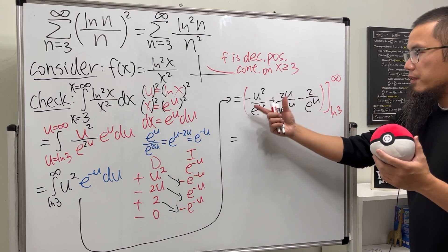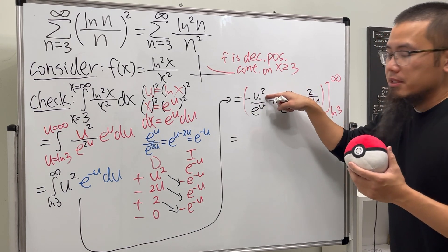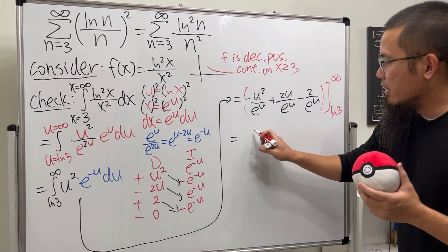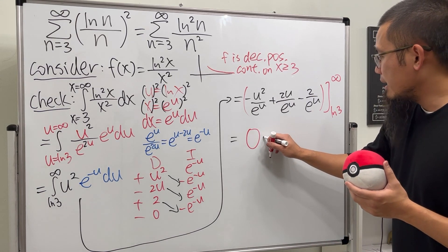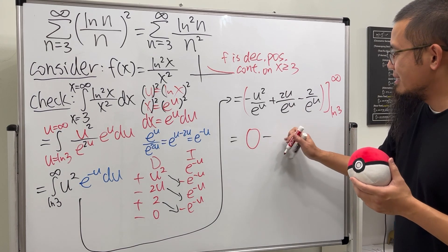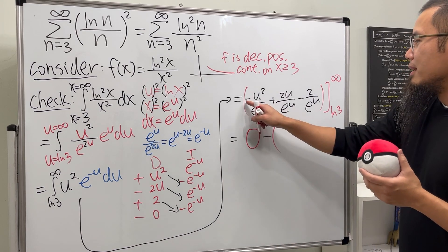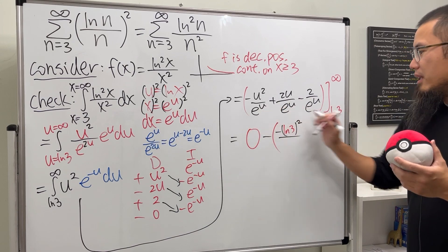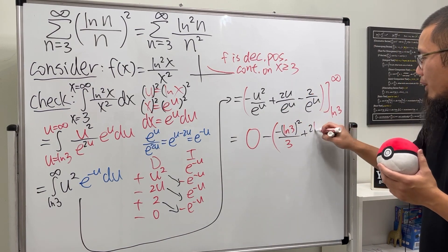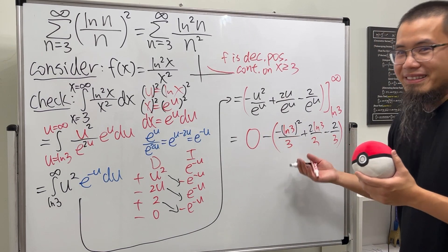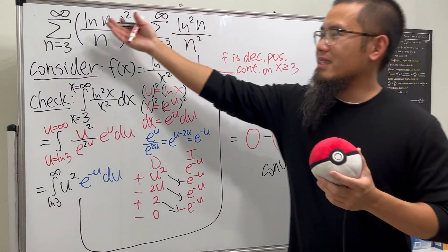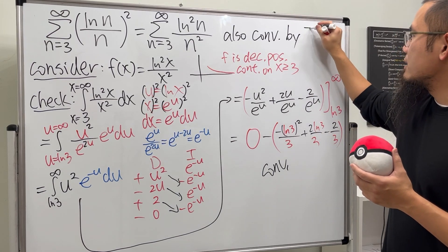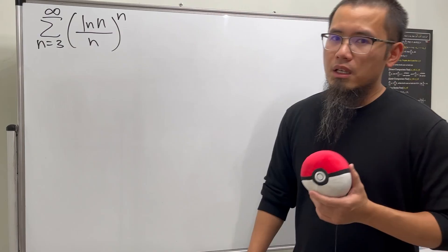When we plug in infinity, each term has a power function on top and an exponential on the bottom, so all terms go to zero. Plugging in ln(3) gives a finite value — the e^(ln 3) simplifies to 3. So the improper integral converges, which means the series also converges by the integral test.